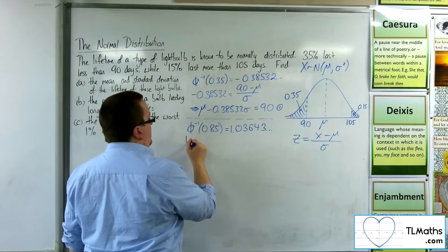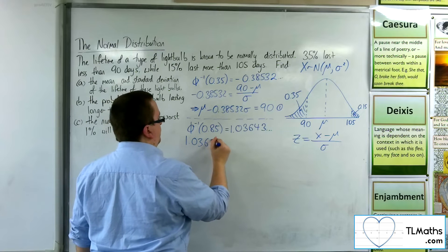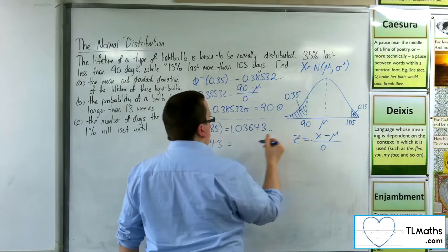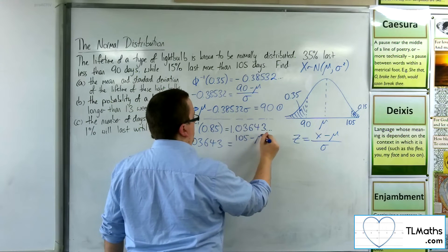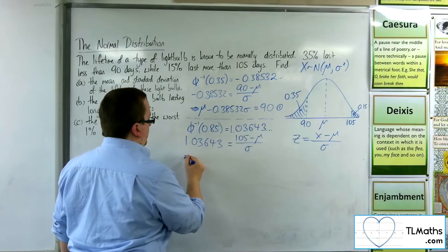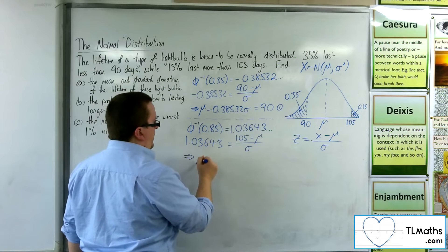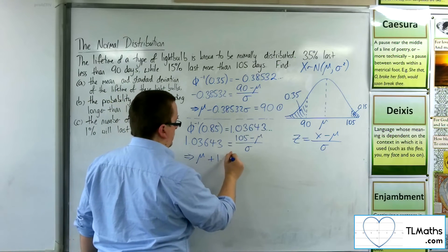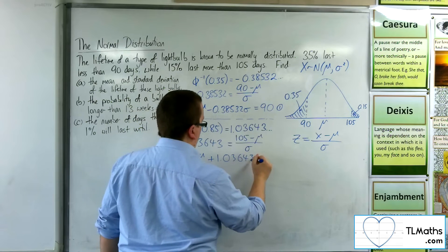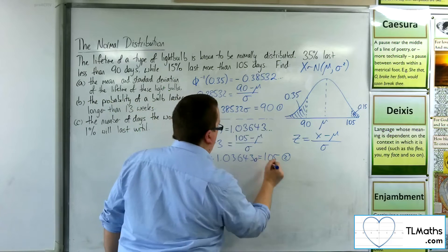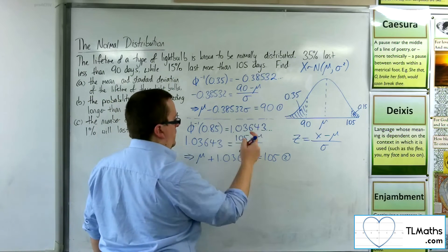So that's my z value. And x is the 105 take away the mean divided by the standard deviation. So rearranging, multiply it by the sigma and add the mu to both sides. And that gives me equation number 2.